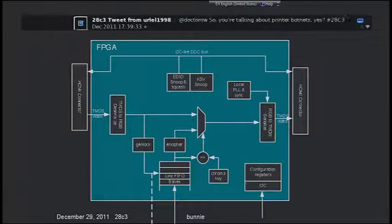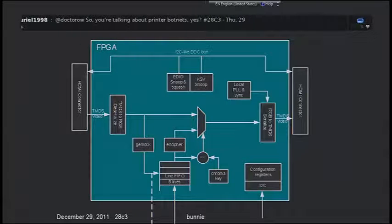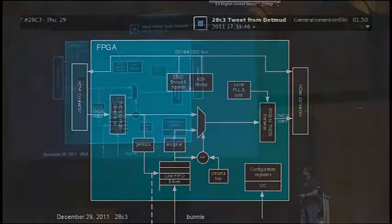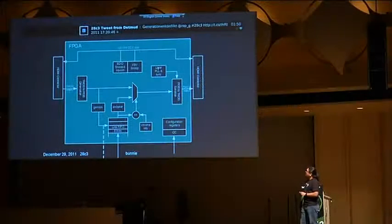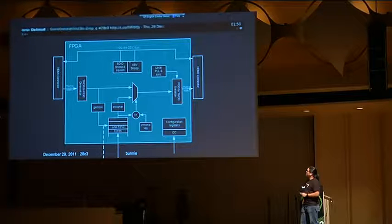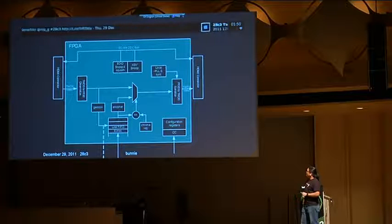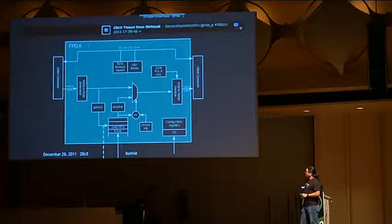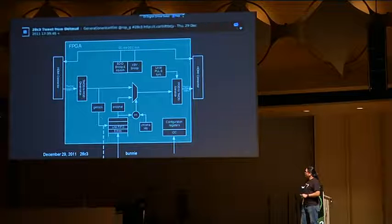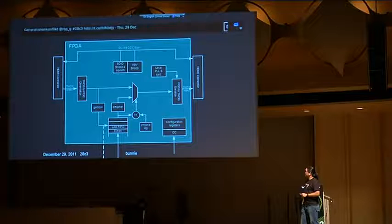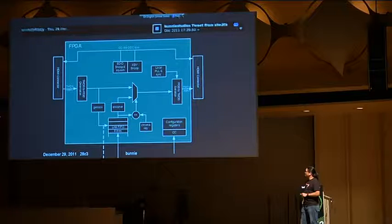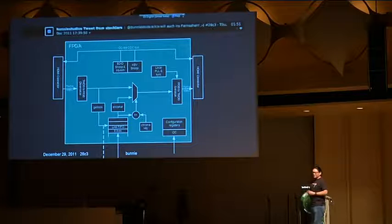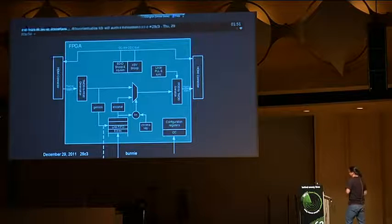This is what the FPGA implementation looks like on the inside — a block diagram. The HDMI comes in, we deserialize it to RGB. We have the I²C DDC bus being snooped and squashed. There's a local PLL sync that re-serializes data. There's a multiplexer that, based upon the genlocked data coming from the FIFO, encrypts and selects on a pixel-by-pixel basis if the incoming data matches the chroma key. That's basically the entire pipeline for the device.